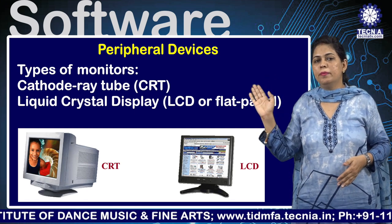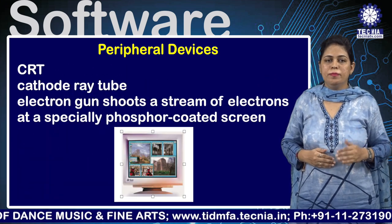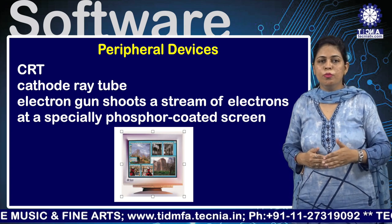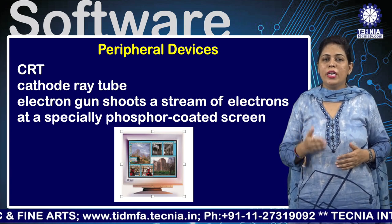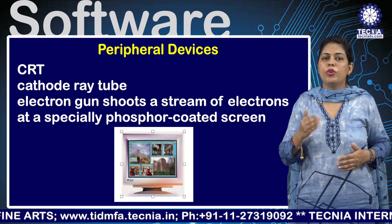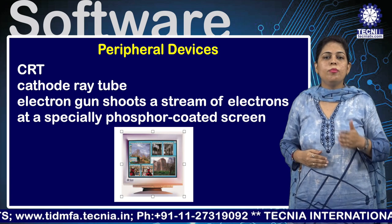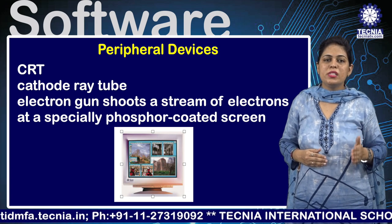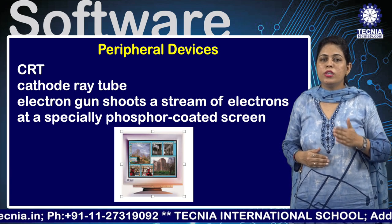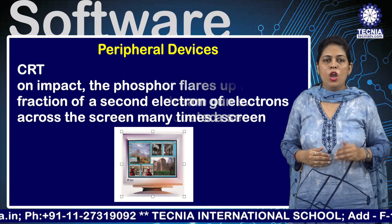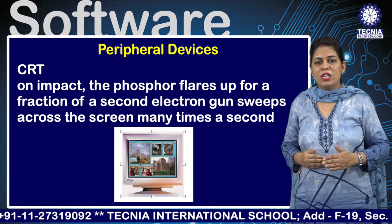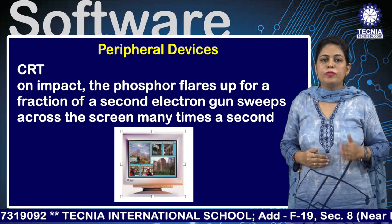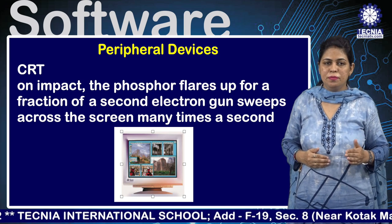CRT stands for cathode ray tube. A cathode ray tube contains an electronic gun that shoots a stream of electrons at a phosphor-coated screen. On impact, the phosphor flares up for a fraction of a second.